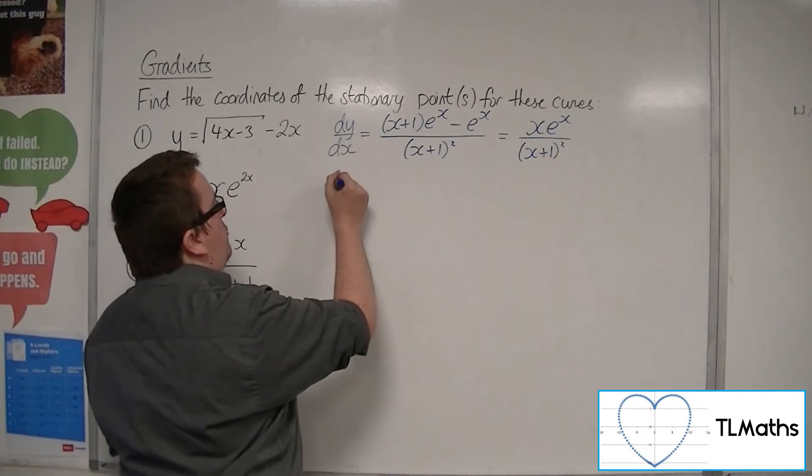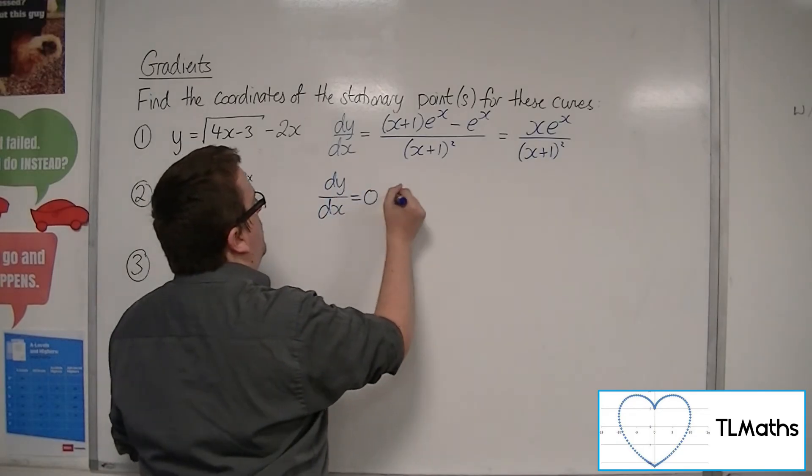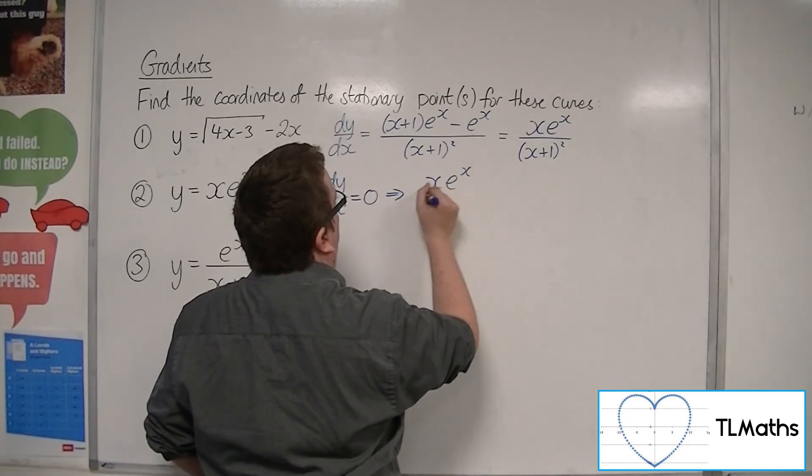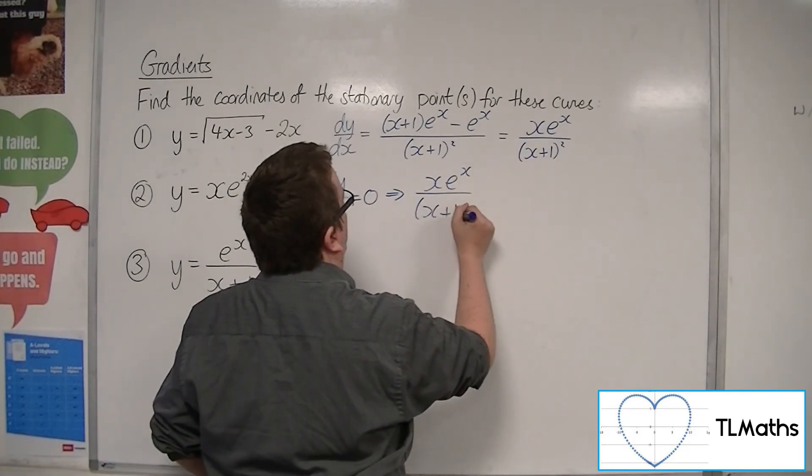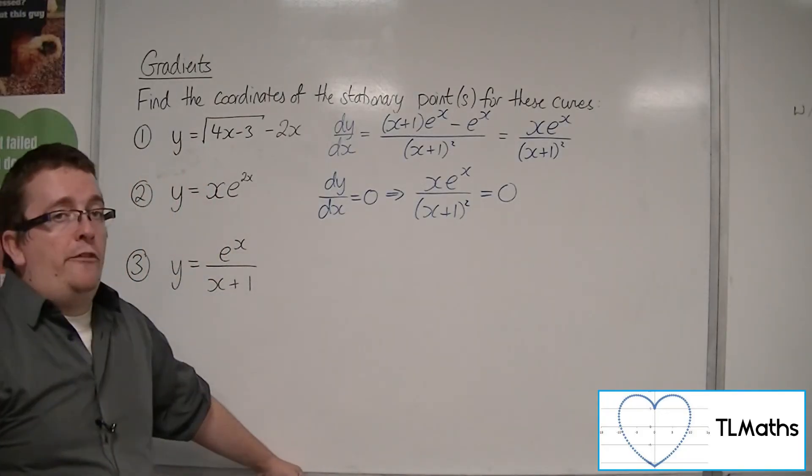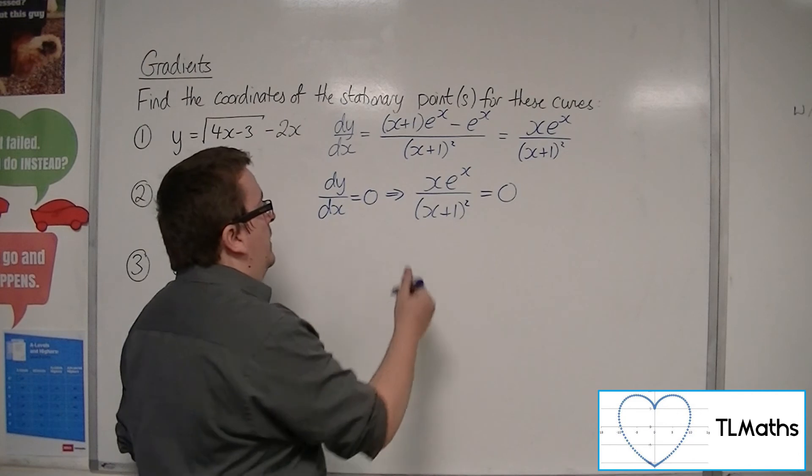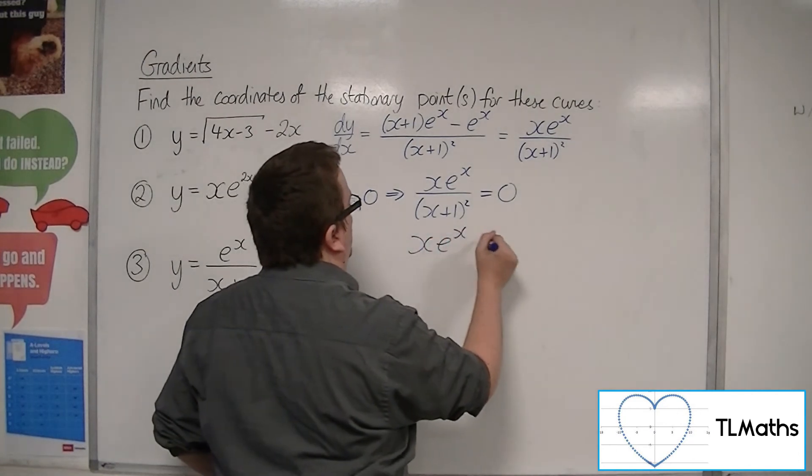So stationary points exist when dy/dx is 0. So xe^x/(x + 1)^2 must be 0. Now the only way a fraction can be 0 is if the numerator is 0. So xe^x would have to be 0.